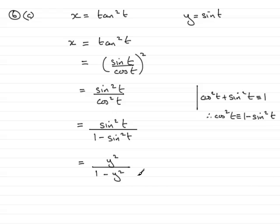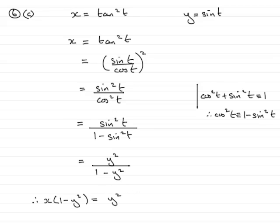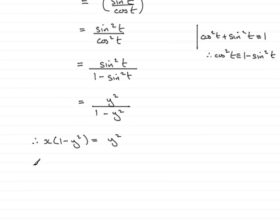This is looking good because we want y² in terms of x. So x equals this, and the next step is to multiply both sides by (1 - y²). That gives x(1 - y²) = y². Now multiply out the bracket: x - xy² = y².